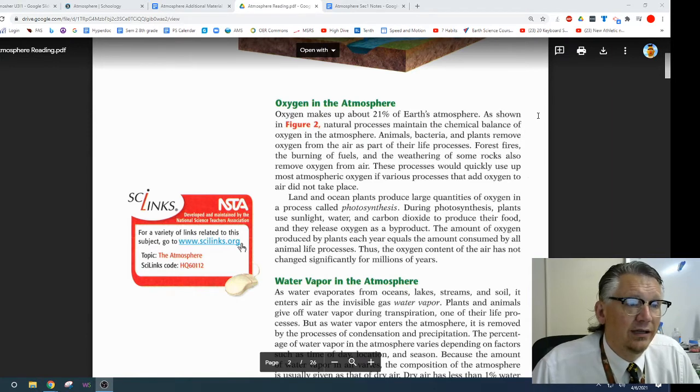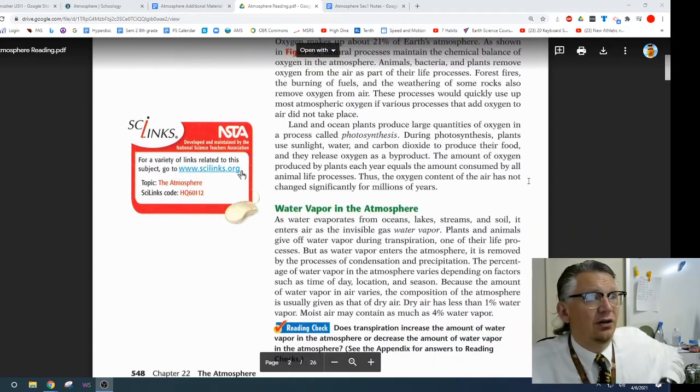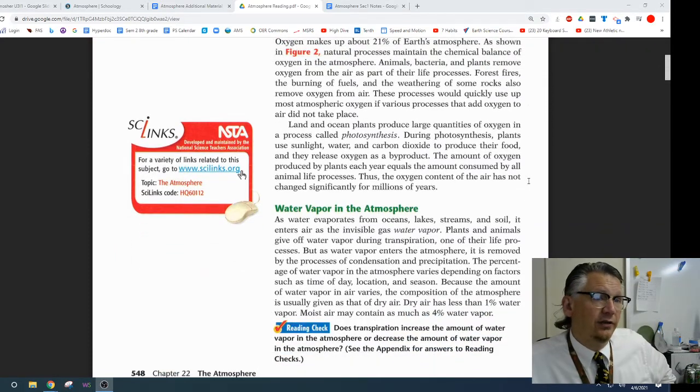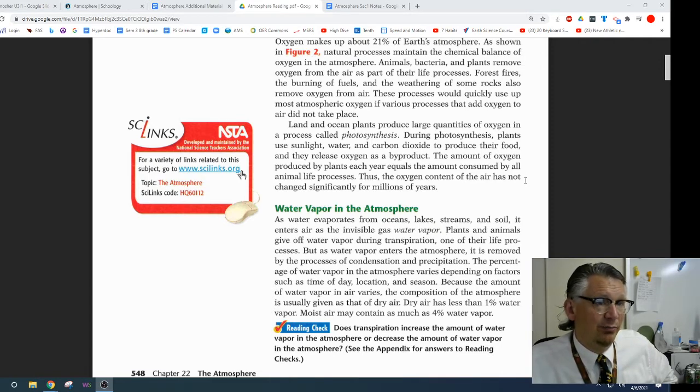Land and ocean plants produce large quantities of oxygen in a process called photosynthesis. During photosynthesis, plants use sunlight, water, and carbon dioxide to produce their food, and they release oxygen as a byproduct. The amount of oxygen produced by plants each year equals the amount consumed by all the animal life processes. Thus, the oxygen content of the air has not changed significantly for millions of years.